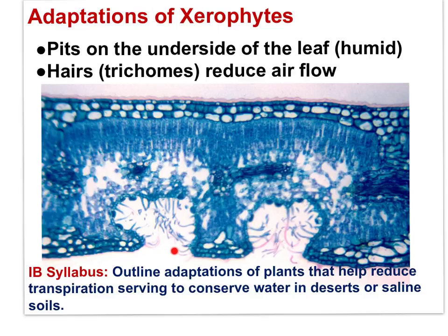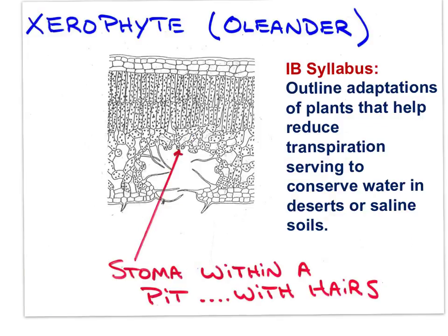The stomata are along the lower epidermis within the pit. The space within the pit becomes very humid, making the diffusion gradient for water less steep, so less water is lost to transpiration. The hairs within the pit further restrict air flow, which further reduces transpiration. Here is a drawing of a xerophytic leaf showing the pit and the exact location of the stoma. The hairs within the pit restrict air flow, thus maintaining a humid condition within the pit and reducing transpiration.